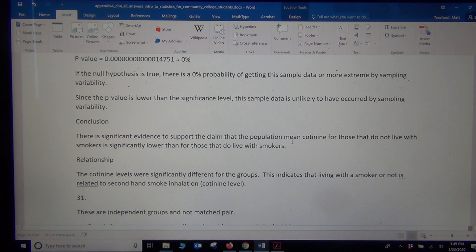Since we rejected the null, but the claim was the alternative hypothesis, we're going to support the alternative. So there is significant evidence to support the claim that the population mean cotinine level for those that do not live with smokers is significantly lower than for those that do live with smokers.